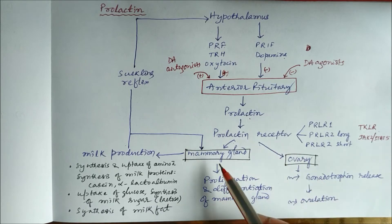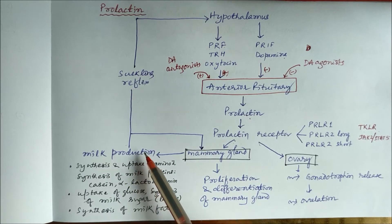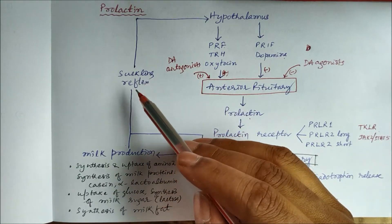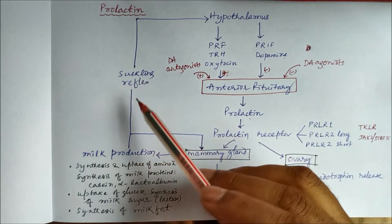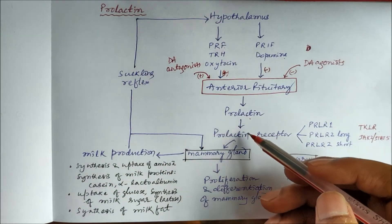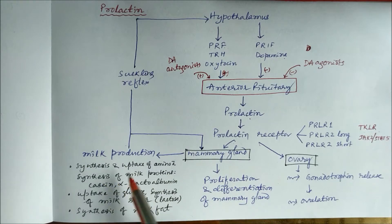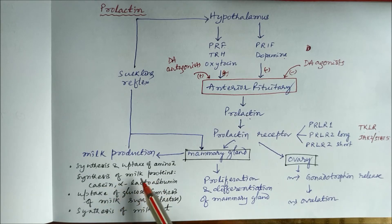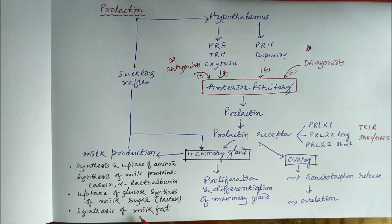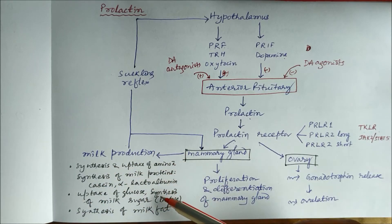In the mammary gland, prolactin receptors mediate milk production. When there is a suckling reflex by a baby, it stimulates the hypothalamus to secrete prolactin, which then acts on the mammary gland. Prolactin action on the mammary gland causes synthesis and uptake of amino acids for milk protein synthesis — proteins like casein and alpha-lactalbumin — as well as glucose uptake for synthesis of lactose, and synthesis of milk fat.